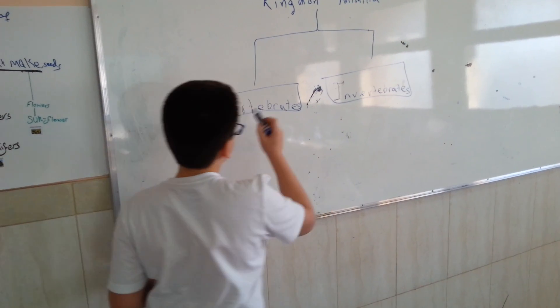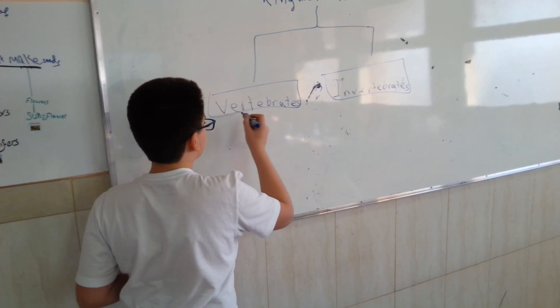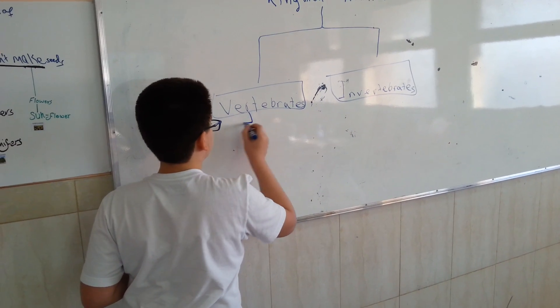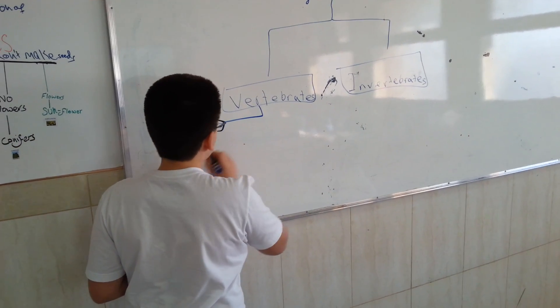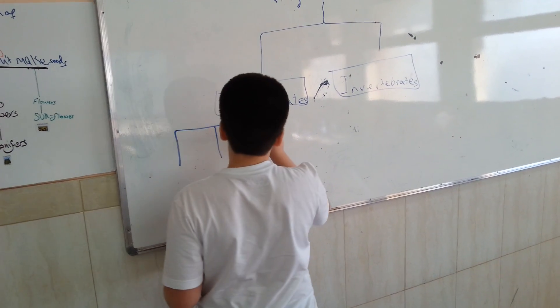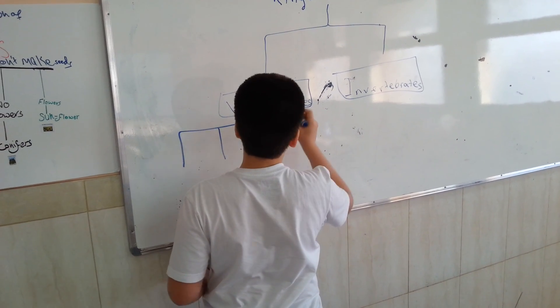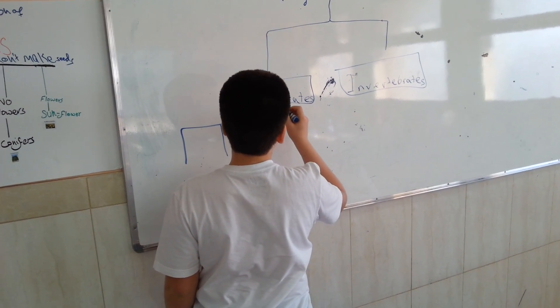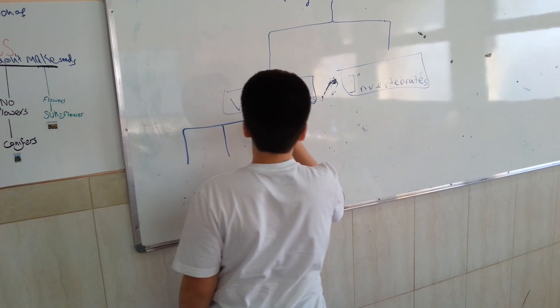Vertebrates are classified into five groups. They are mammals, fish, reptiles, amphibians, and birds.